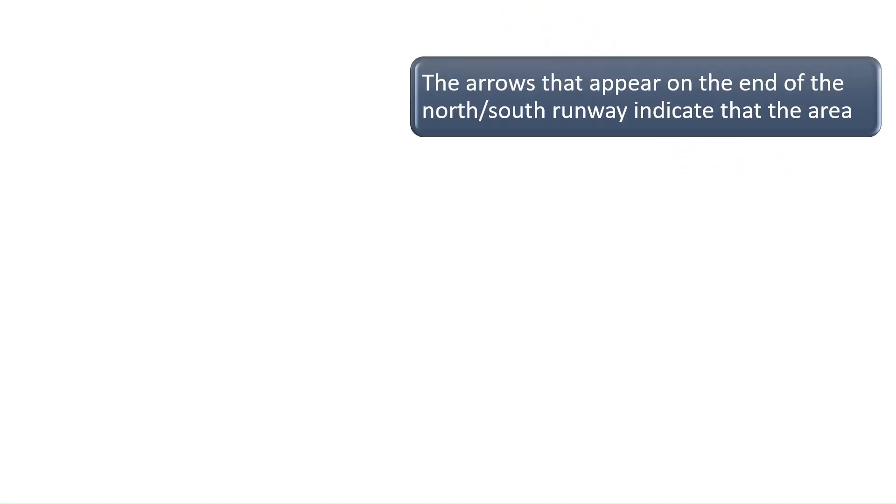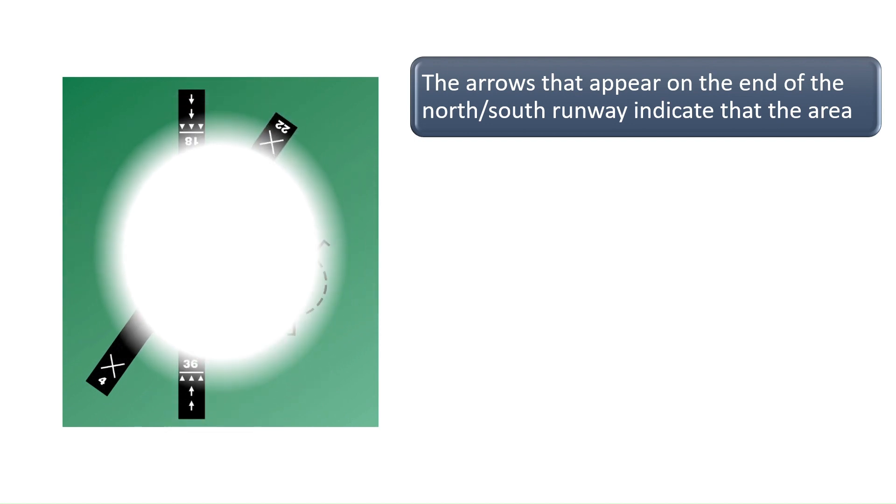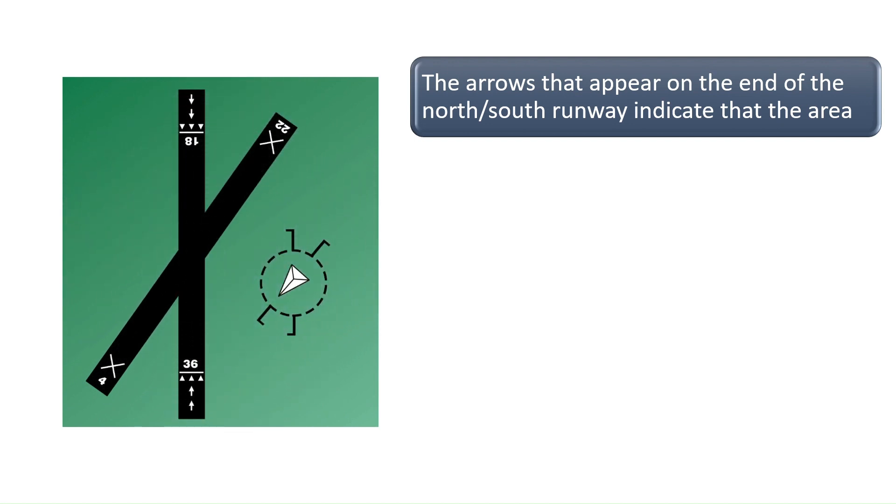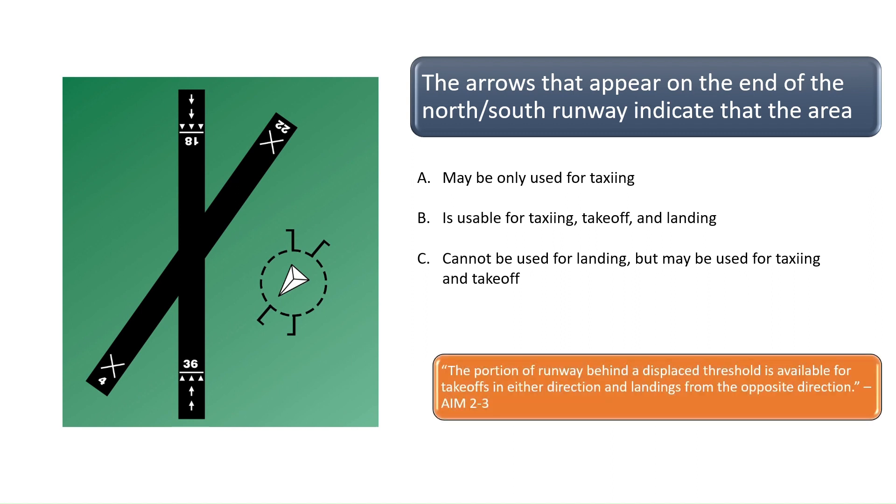The arrows that appear on the end of the north-south runway indicate that the area. According to Section 2-3 of the Aeronautical Information Manual, the portion of runway behind a displaced threshold is available for takeoffs in either direction and landings from the opposite direction.